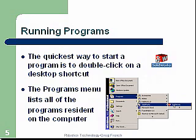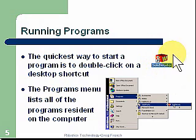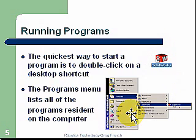Running programs — the quickest way to start a program is to double-click on a desktop shortcut. Here would be a shortcut of SolidWorks on the desktop. The programs menu lists all the programs resident on the computer. If you go to your start button and go to programs, you'll see that SolidWorks is installed.